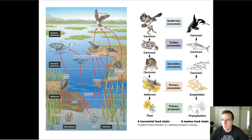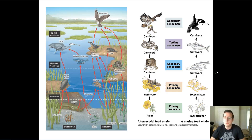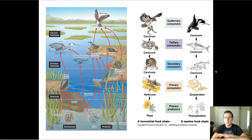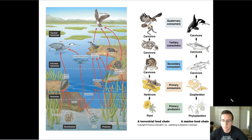Environmental scientists sometimes use top-down control to help fix what humans did to the ecosystem. But remember, this is very dangerous because of cascade effects — it's unpredictable. Sometimes there are so many relationships within the food web that one small change can drastically alter the entire web.